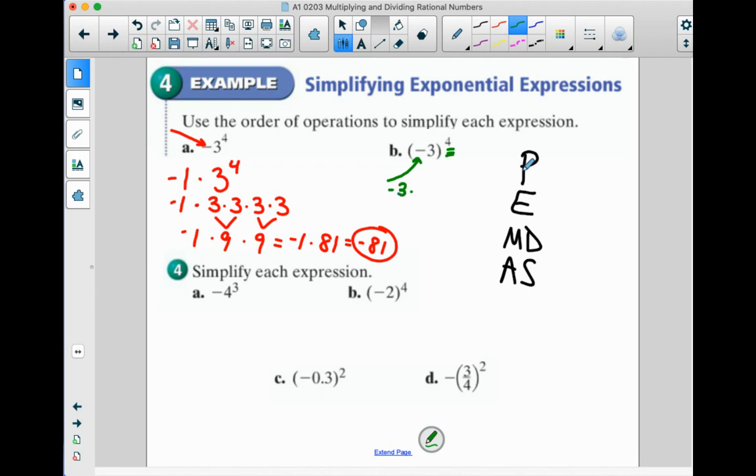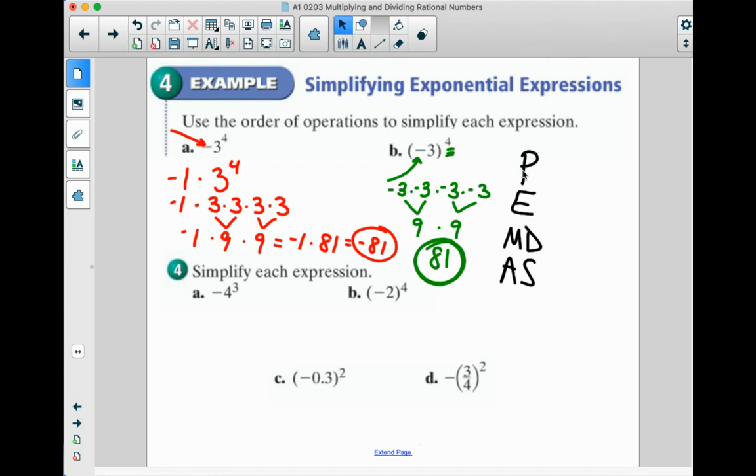So this is like saying negative 3 times negative 3 times negative 3 times negative 3. So negative 3 times negative 3 is 9. Negative 3 times negative 3 is also 9. 9 times 9 gets you positive 81. So that one small difference can make a big difference in your answer if the exponent is even.